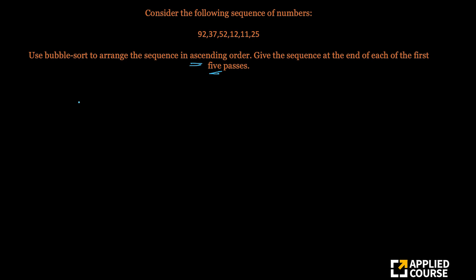Very simple. At the end of first pass, what happens in bubble sort? The largest number should go to the rightmost place. So let's actually not just that, let's also work this out.